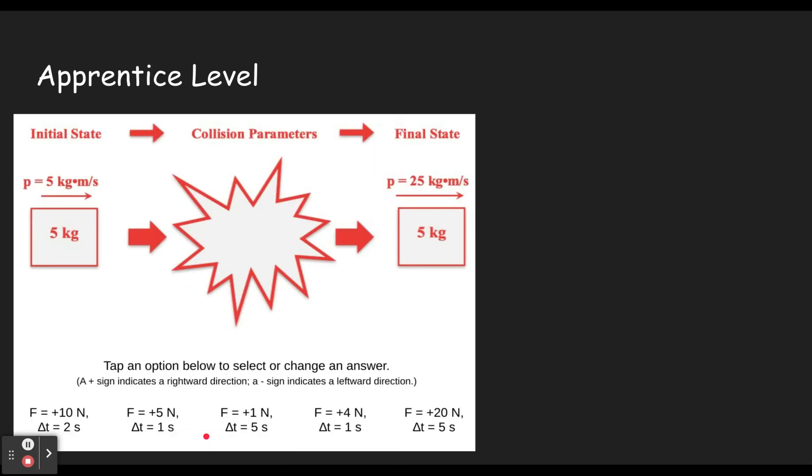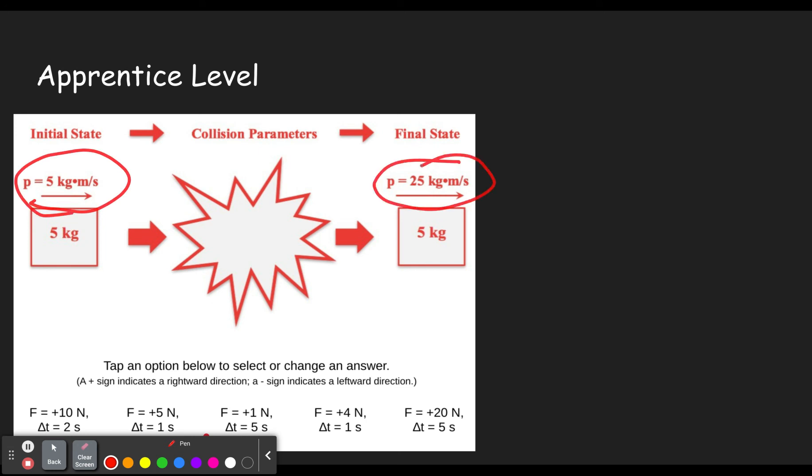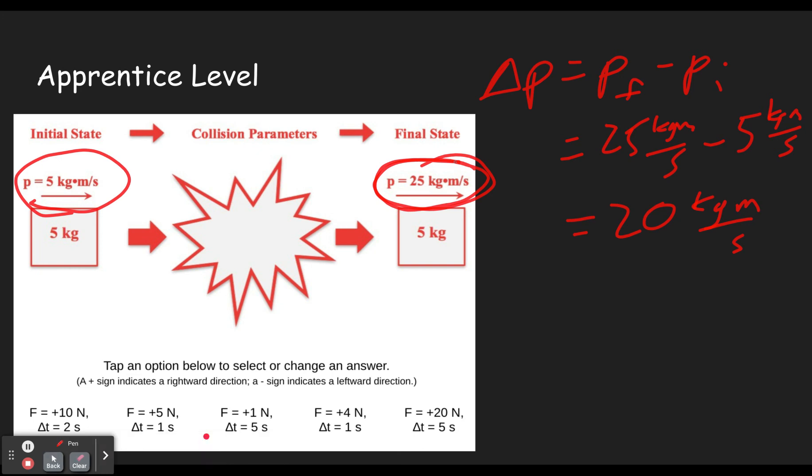Moving on to go through the three levels. So first level here, the apprentice level is different than all the others. The other ones give you a velocity up here, but these ones give you a momentum. So we're going to do a change in momentum. Anytime you have a change in something, it's the final value minus the initial value. So that's going to be 25 kilogram meters per second minus 5 kilogram meters per second. So that gives us a change of 20 kilogram meters per second. Now be careful, because sometimes the final is smaller, and that means you have a negative change. In this case, the final is bigger, and so we got a positive change of 20.